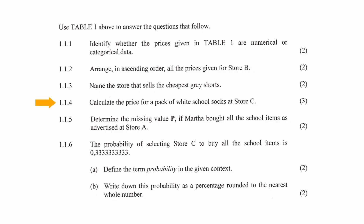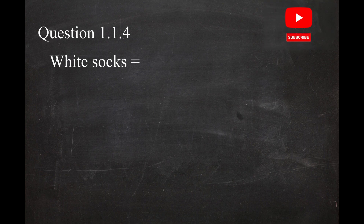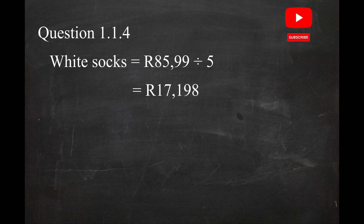In question 1.1.4, you have to calculate the price of a pack of white school socks at Store C. From the table, we can see that at Store C, white socks are sold at a cost of R85.99 for 5 packs. So the cost of one pack of white socks is 85.99 divided by 5 packs, which equals R17.198. Rounding to two decimal places gives a cost of R17.20.